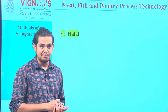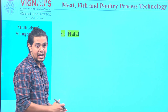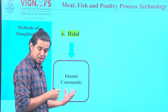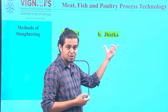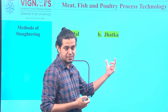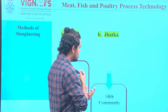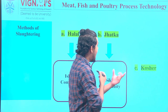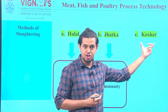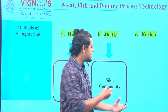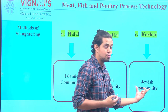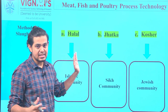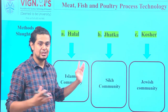As far as religious methods of slaughtering are concerned, there are three important types. The first is the halal method, exclusively followed by the Islamic community. The second is the jhatka method, followed exclusively by the Sikh community. The third is the kosher method, exclusively followed by the Jewish community. These are the three important slaughtering methods employed in religious animal slaughter.